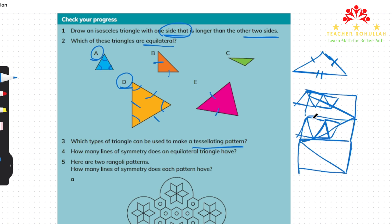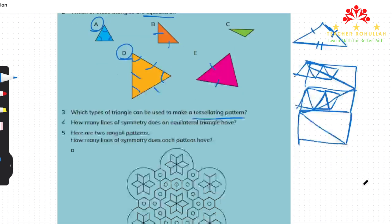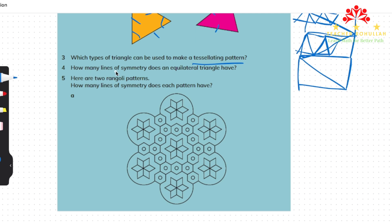Let me scroll up to question four. It says: how many lines of symmetry does an equilateral triangle have? An equilateral triangle has equal sides and equal angles. If we draw a triangle where this side, this side, and this side are all equal, then all sides and all angles are the same size.